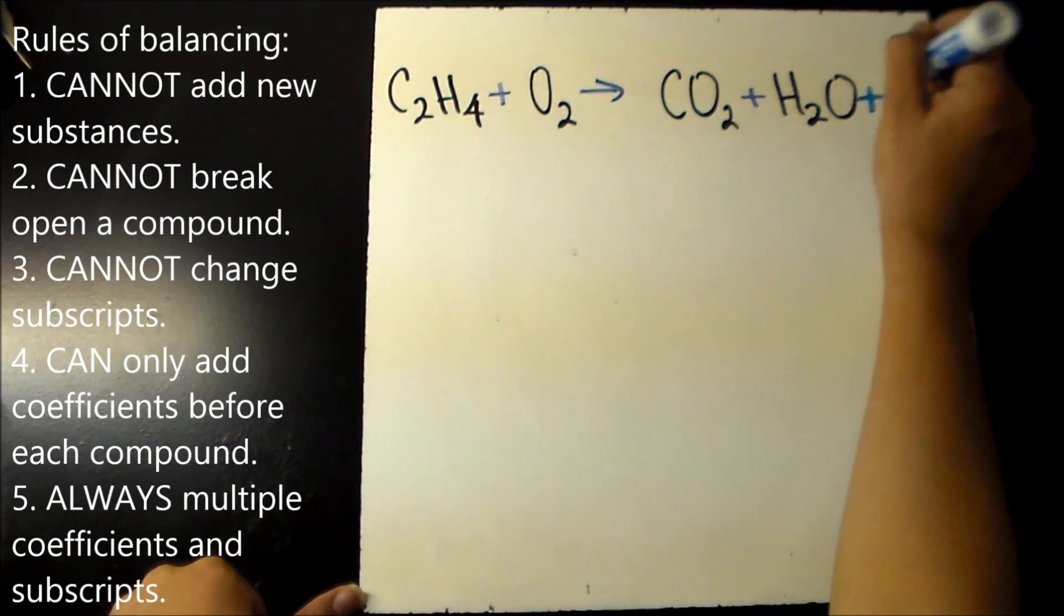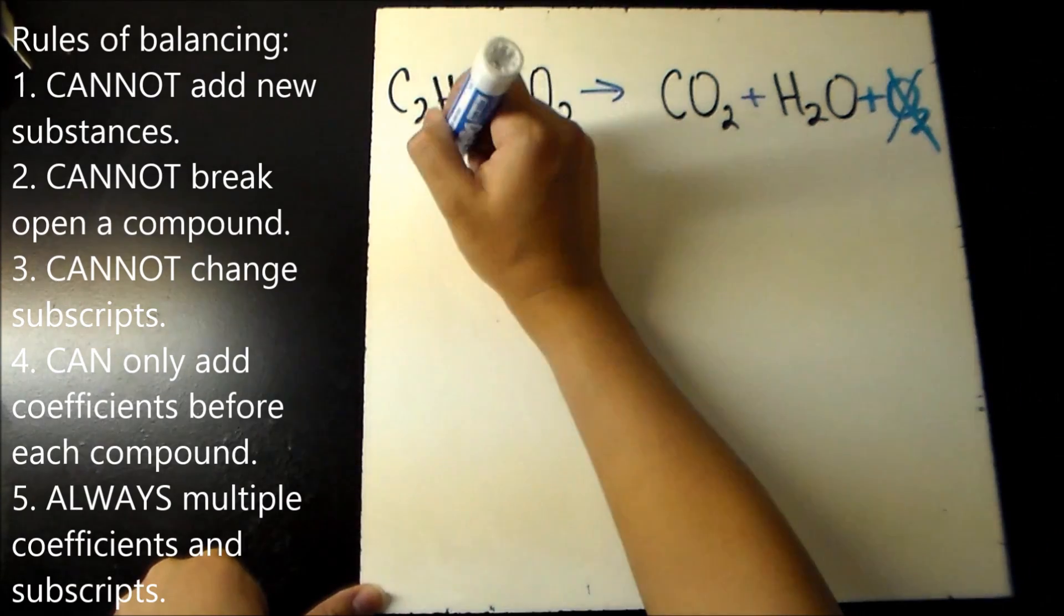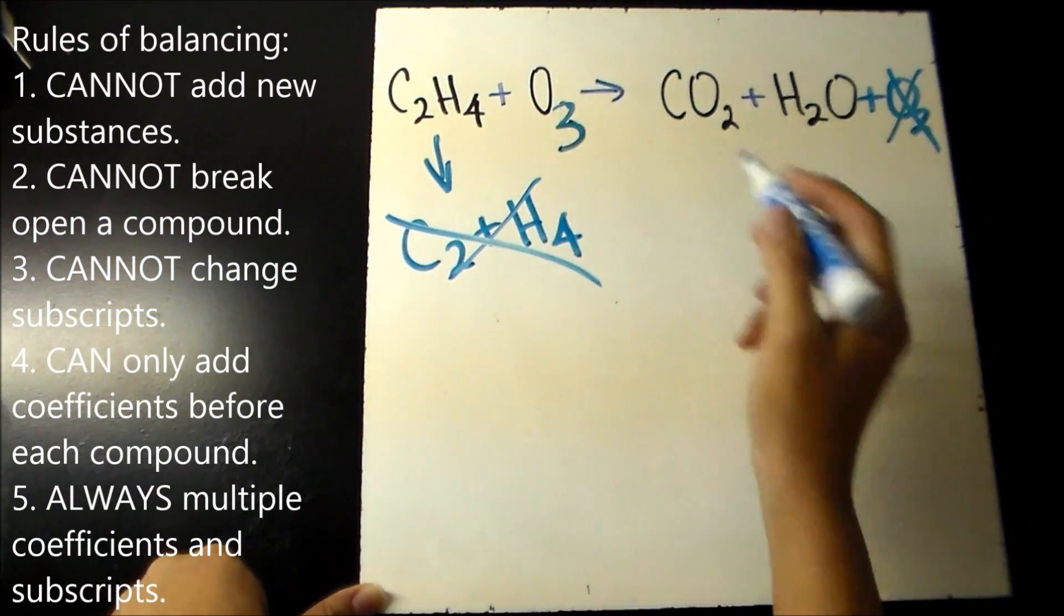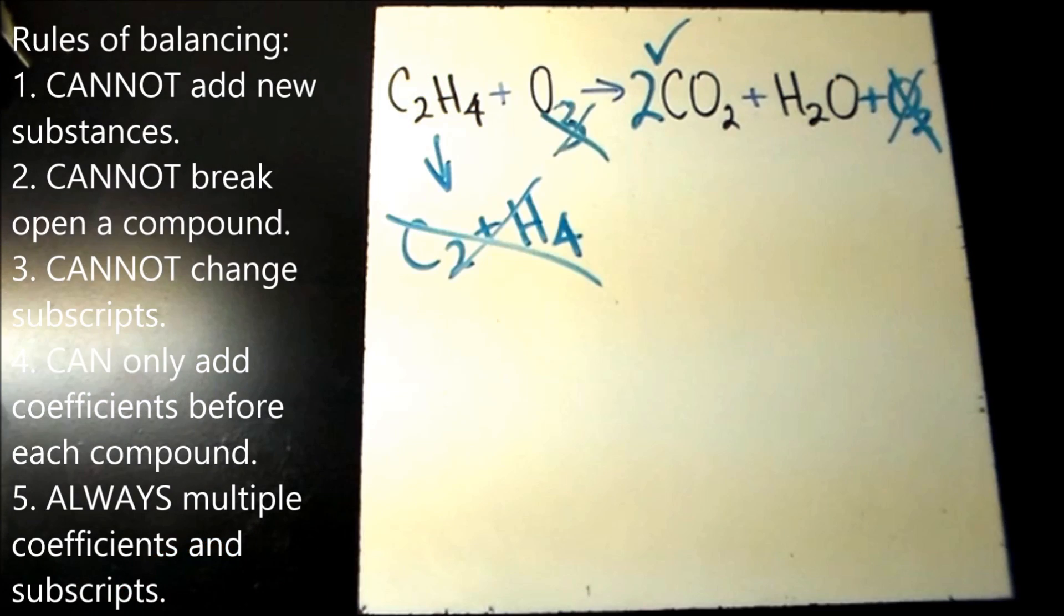In order to balance, you must consider the rules for balancing. You cannot add any new substances. You cannot break open a compound. You cannot change subscripts of a compound. You can only add coefficients or numbers before each compound. And always multiply coefficients and subscripts.